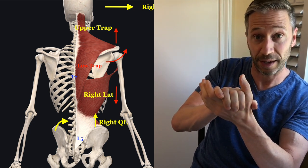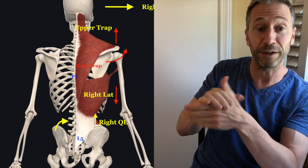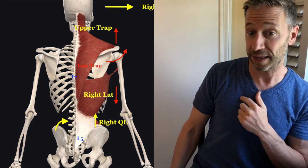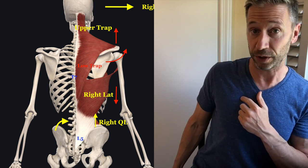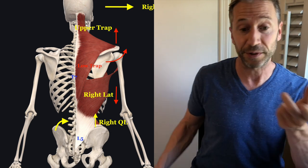Now you need the low trap and the tricep to bring that arm back, which includes external rotation of that right scapula. That's how it all works together.